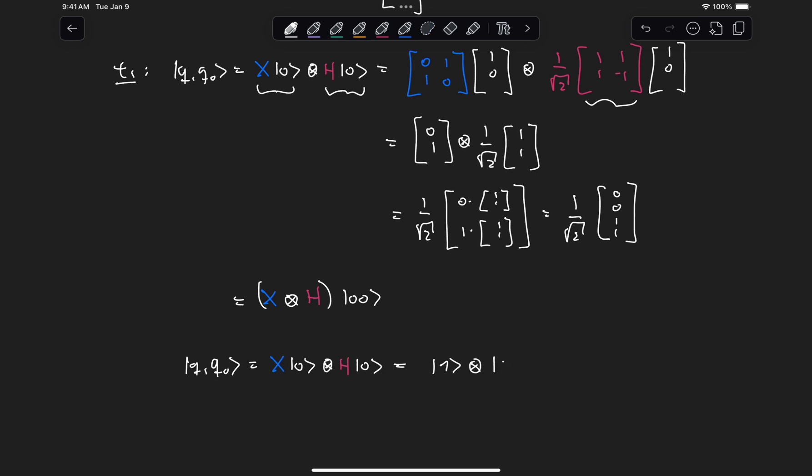Tensored, ket plus, which is 1, tensored, 1 over root 2, 0 plus 1.